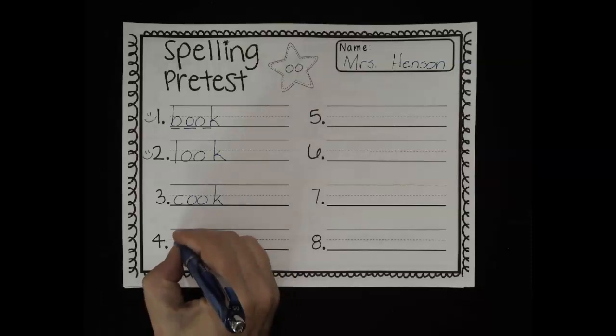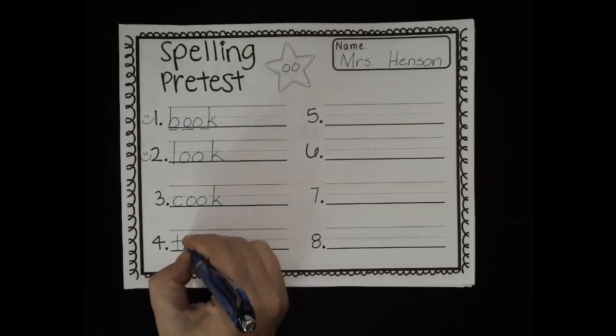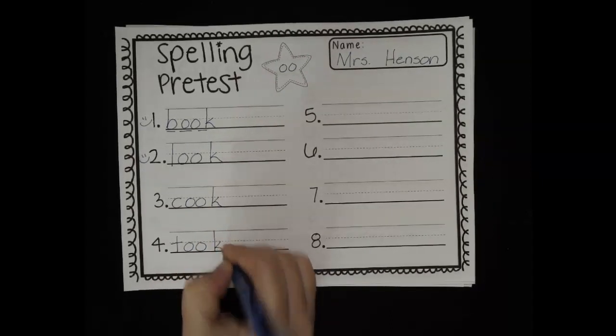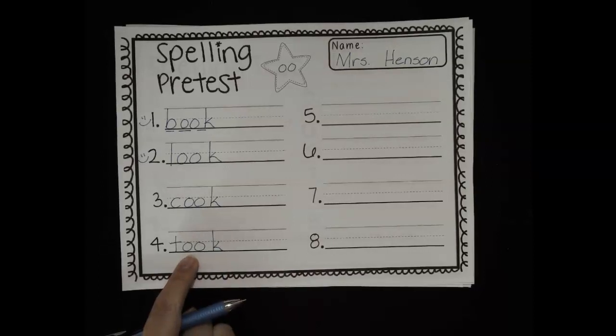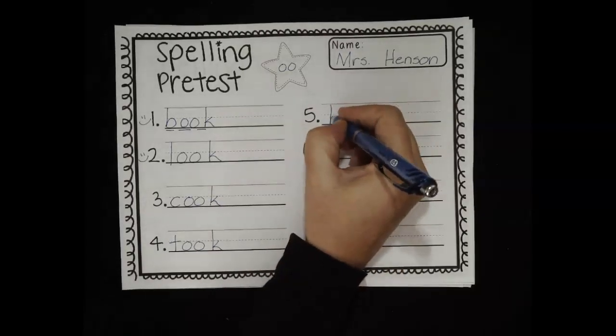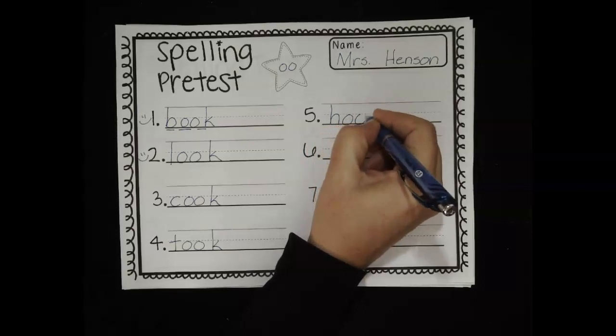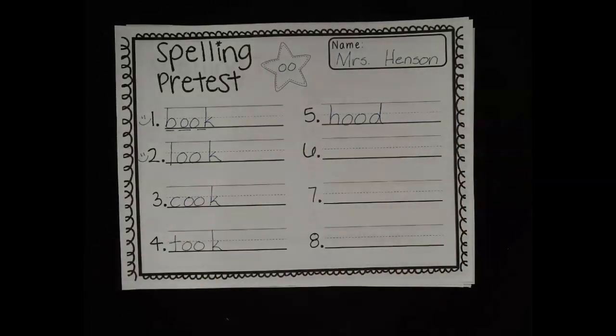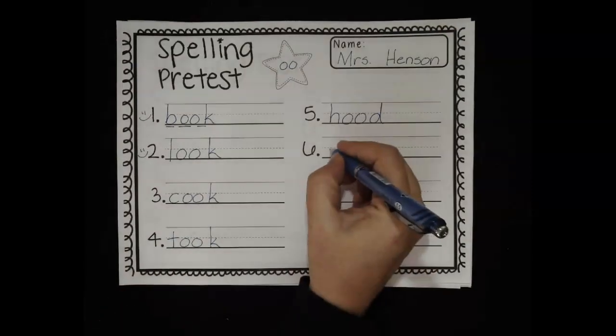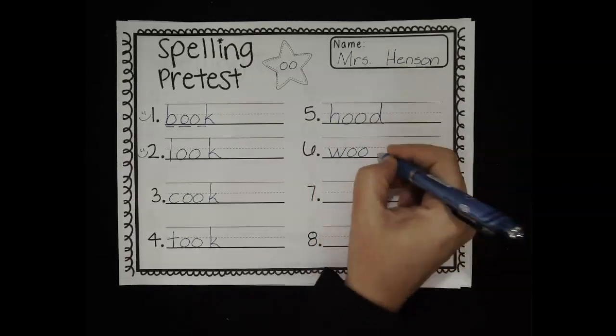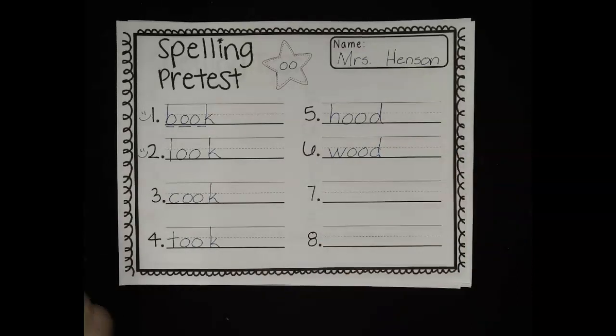Number four, took. T, uh, there's those two O's again, K. Another K. Took. Number five was hood. Hood. H, uh, uh, D. Hood. All right, number six, wood. W-O-O-D.